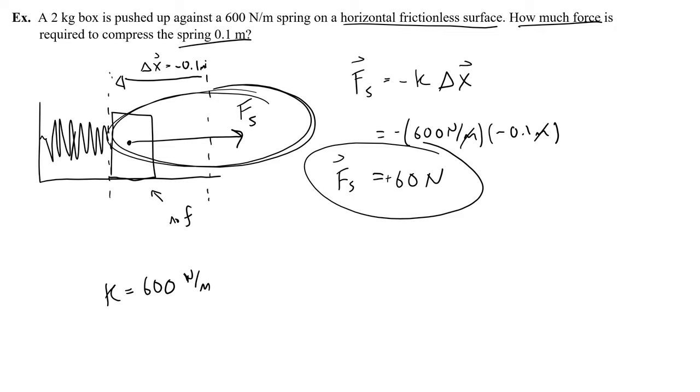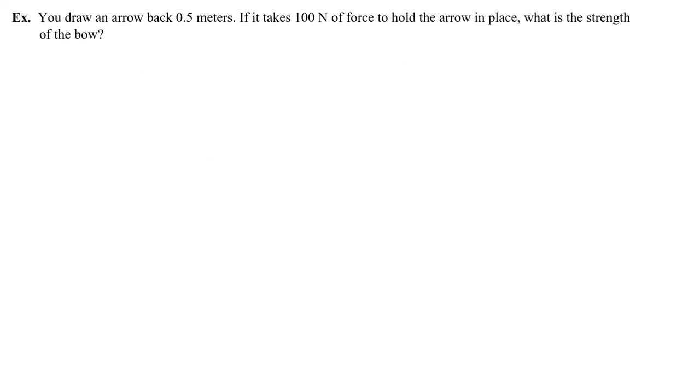Let's do another example. You draw an arrow back 0.5 meters. If it takes 100 newtons of force to hold the arrow in place, what is the strength of the bow? The strength of the bow, maybe it would say the rigidity of the bow strings, this means that we are being asked to find the spring constant k.